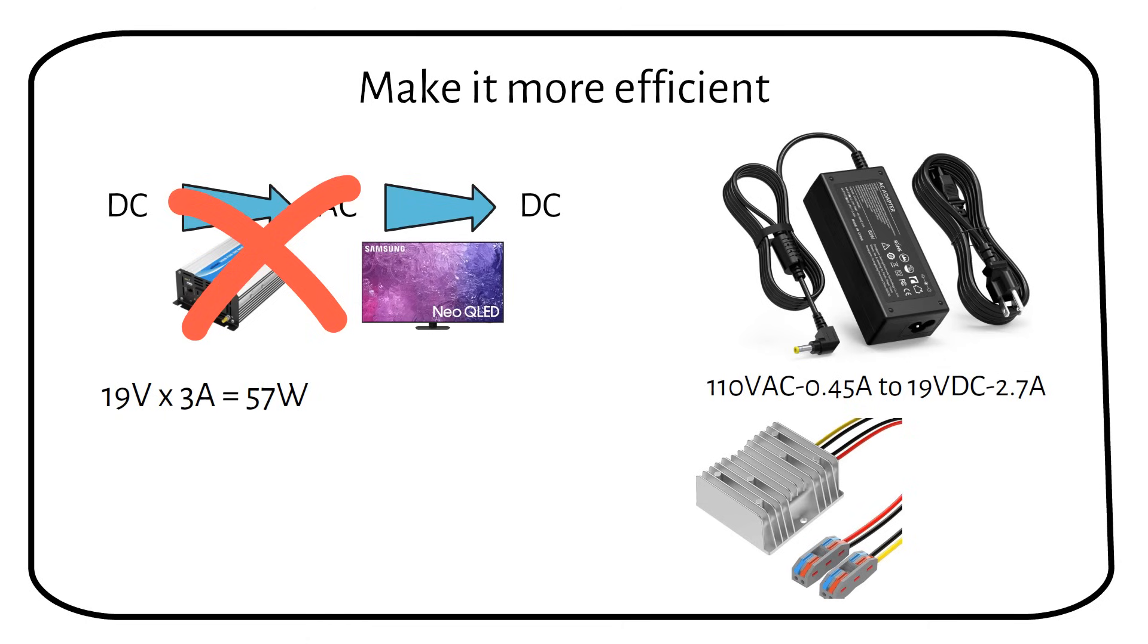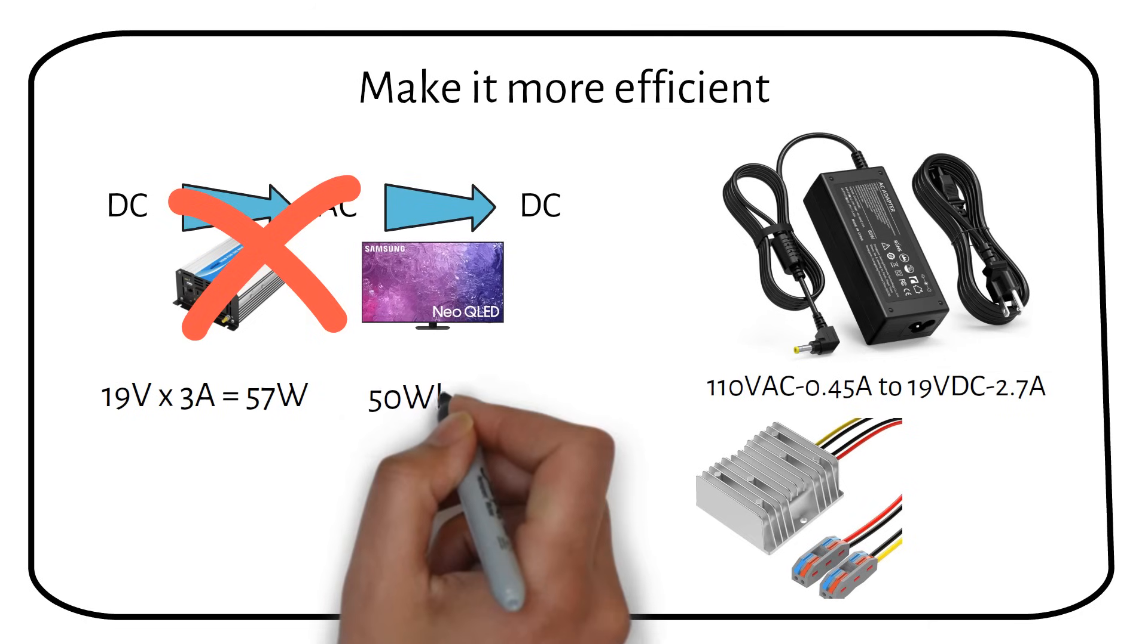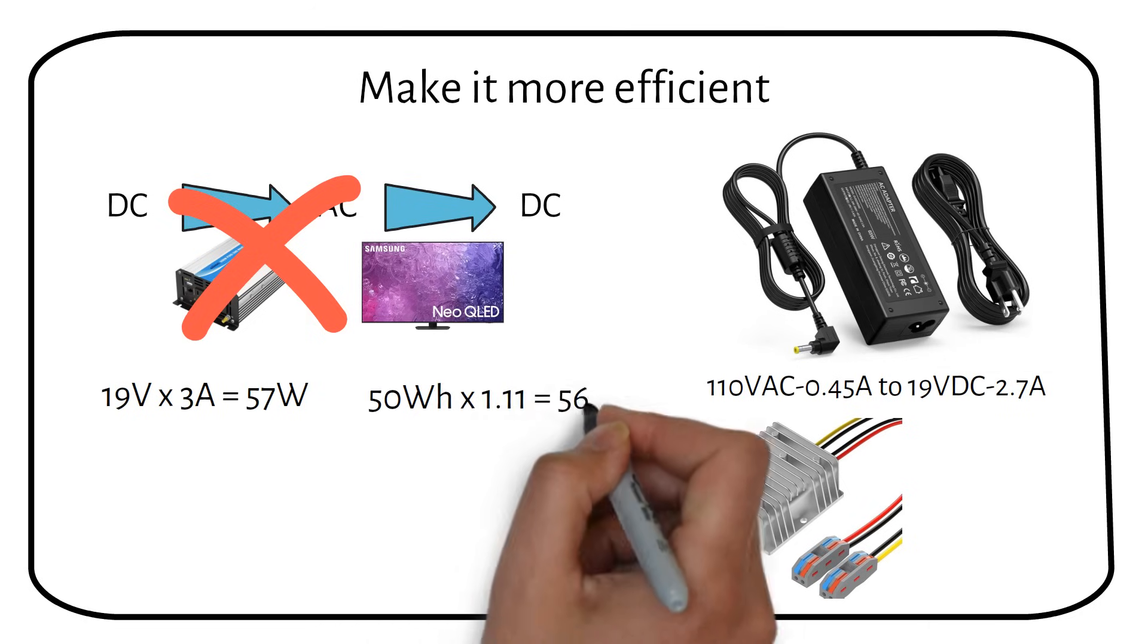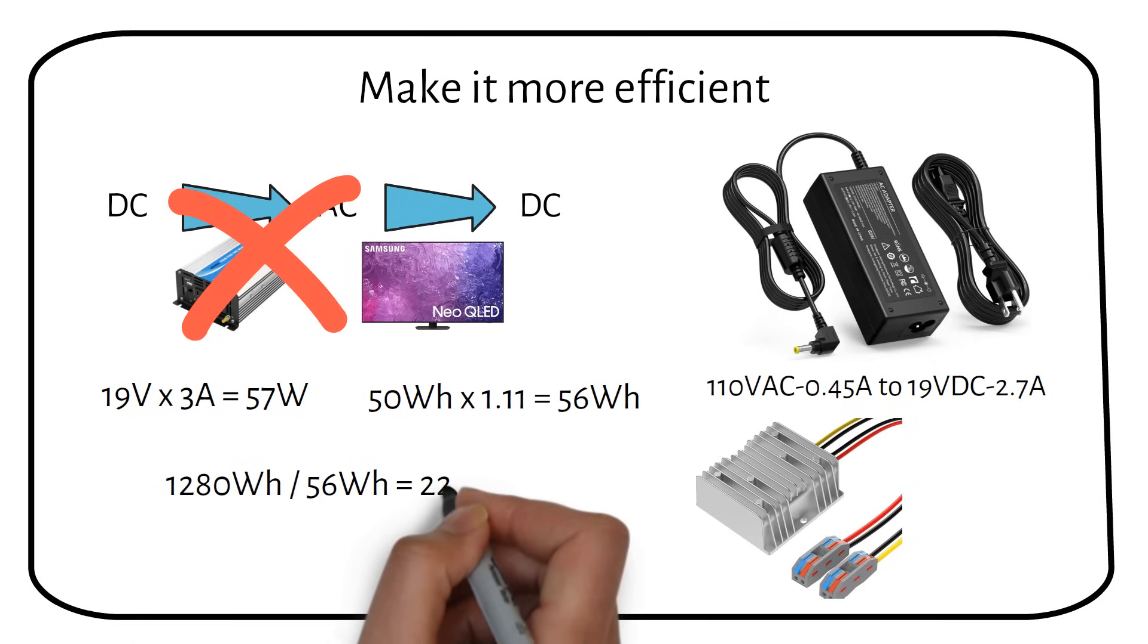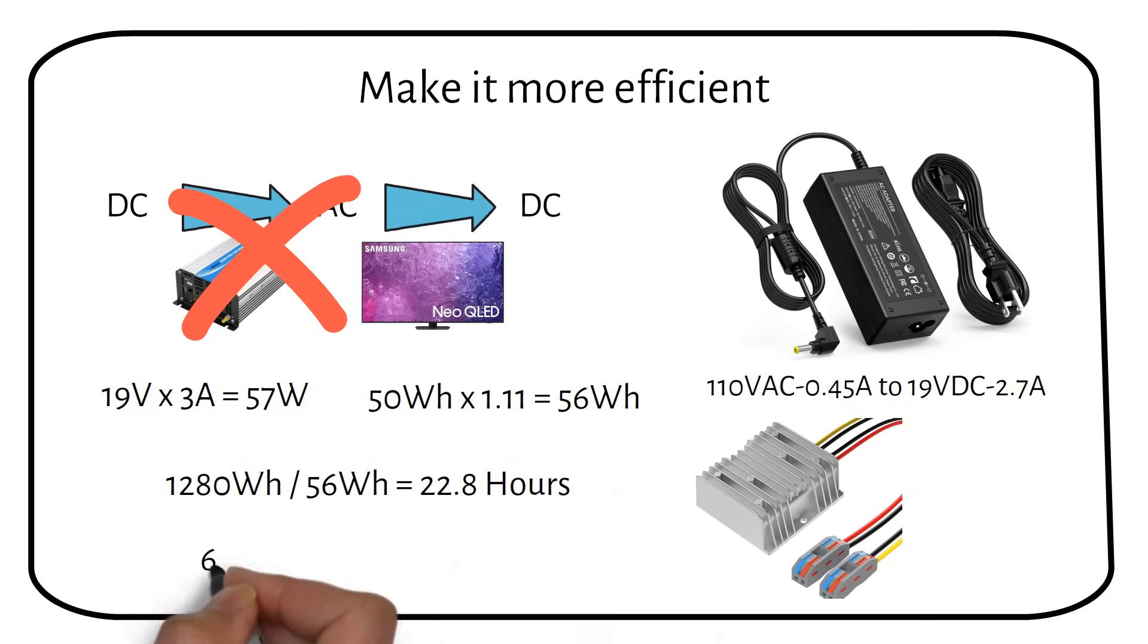The DC to DC converter also has a 90% efficiency, just like the inverter. We get a consumption of 56 watt hours. By applying the same formulas, we get a total run time of 22.8 hours. 6 hours or 35% more than if we use an inverter.